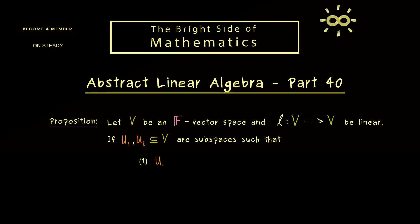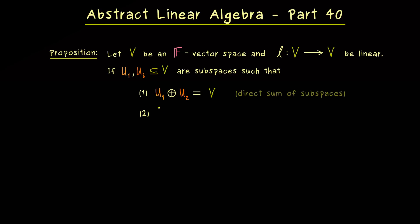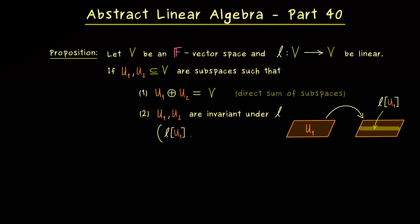Let's call them U1 and U2, subspaces that satisfy two properties. First, the direct sum of the two subspaces should be equal to V. This means both subspaces together span the whole vector space V, and the intersection of U1 with U2 is only the zero vector. Second, each subspace is invariant under our linear map L, meaning the image of U1 under L is a subset in U1, and the same for U2.